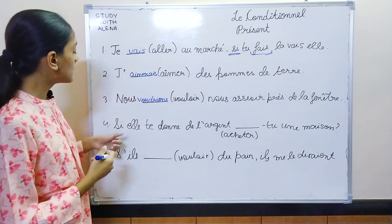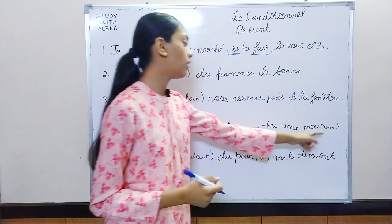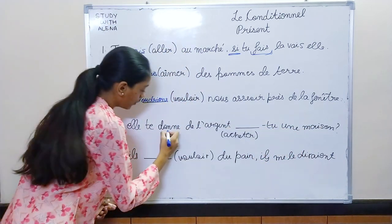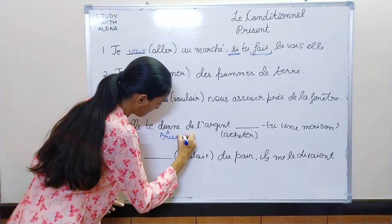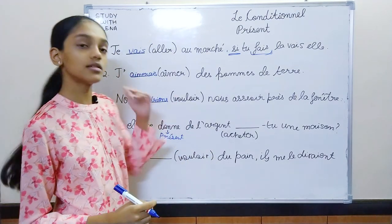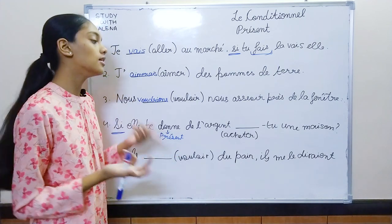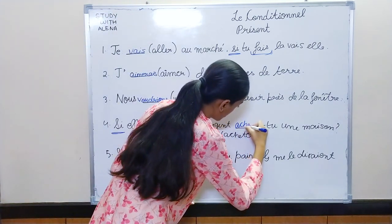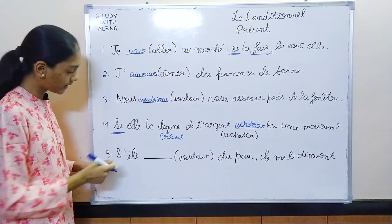Next: si elle te donne de l'argent, dash tu une maison. We have si and donne is in present. So si plus present — we can add present, imperatif, or future. I'll prefer future. Answer: achètera.